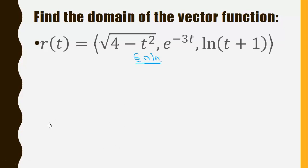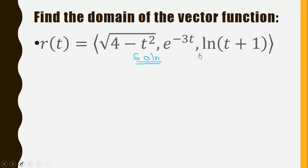We are supposed to find the domain of the vector function R(t), which equals the square root of (4 minus t squared), e to the power negative t, and ln(t plus 1). This is how the vector function is parametrically defined.